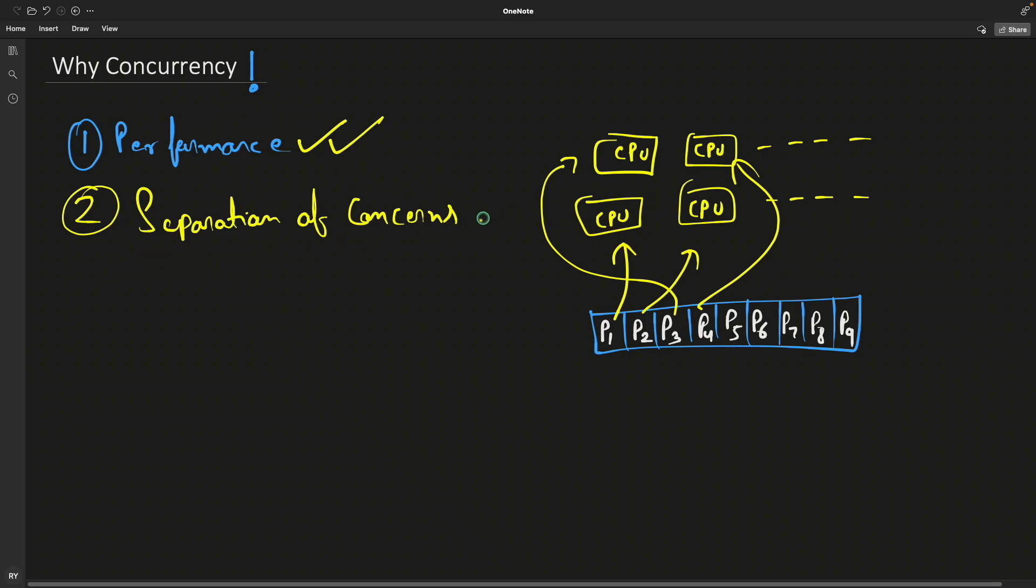Now what is this separation of concern? This requires more attention. Let's say you have a music player. This is your music player - you're watching some video, so this is the video part, and we have the button sections here. We know this is one process P1.